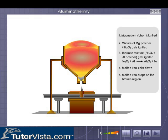The molten iron drops down on the broken region, welding the broken rails together.